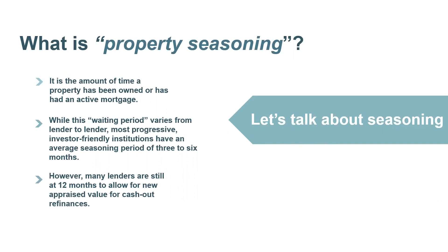What is property seasoning? It is the amount of time a property has been owned or has had an active mortgage. Different lenders have different seasoning requirements. When you're looking at BRRRR properties, it's important to work backwards. If it's going to be a three-month rehab and you lease it up a month later, you're four months in and looking for a refinance. You want to know what lenders will allow for new appraised value at what timeframe — some are 12 months, some are six months, some are 90 days. But if the property is vacant, they will do a rental survey and give you a slight haircut on the LTV.